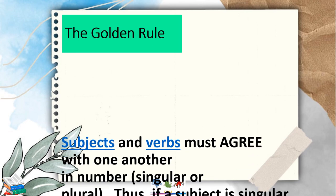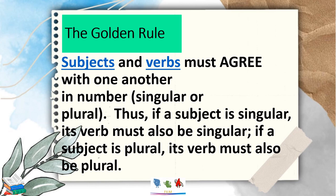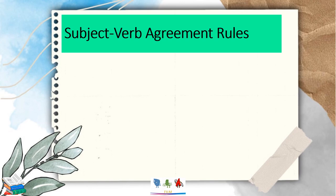Let's revisit the golden rule. It says subjects and verbs must agree with one another in number — singular or plural. Thus, if the subject is singular, its verb must also be singular. Let us go through some of the subject-verb agreement rules.